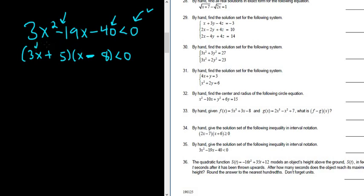So 3x times x is 3x squared. That part's easy. So 5 times negative 8 is negative 40. So what we have to check is this middle term. So to check the middle term, what you do is you take the inside and the outside. So here we get 5x, and then here we get negative 24x. And when you add these, you get negative 19x.